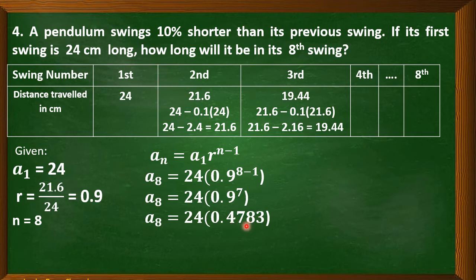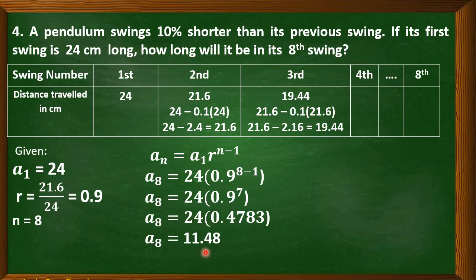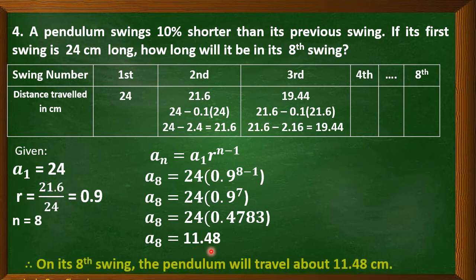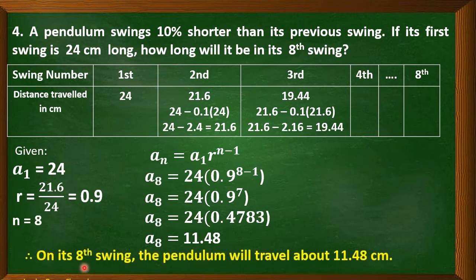So we have 0.4783, and it will be multiplied by 24. For our final answer, round to the nearest hundredths — that gives us 11.48. Therefore, on its 8th swing, the pendulum travels about 11.48 cm.